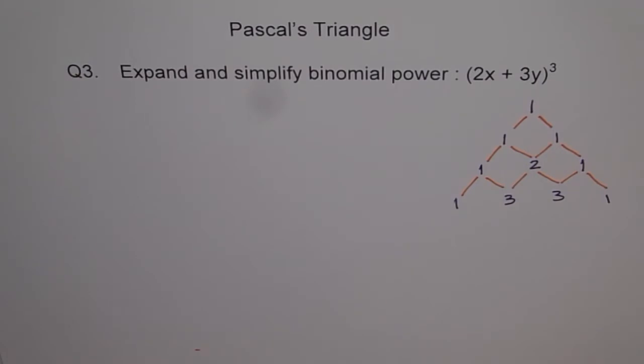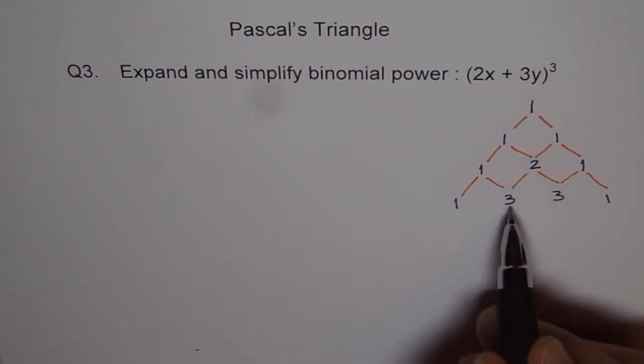So since the exponent is 3, the third row is of our interest. So what does this tell us?